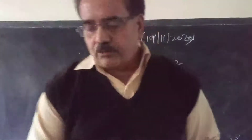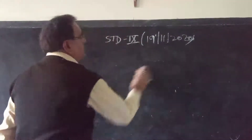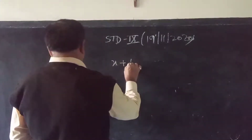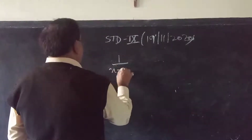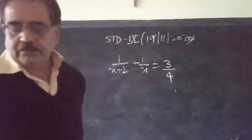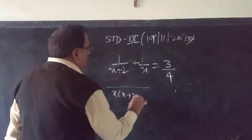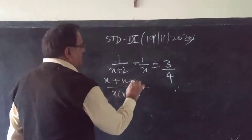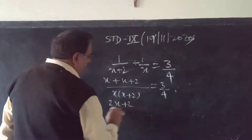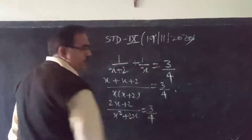However, this next question you cannot solve by substitution — you have to take LCM. The question is: 1/(x+2) + 1/x = 3/4. Here, x and x+2 are the denominators, so taking LCM gives (2x+2) / (x²+2x) = 3/4.